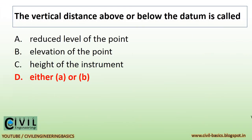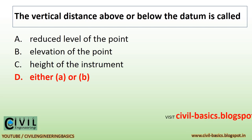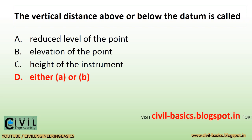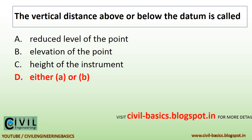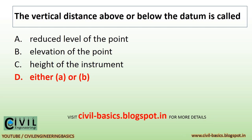The vertical distance above or below the datum is called the reduced level of the point, or elevation of the point.